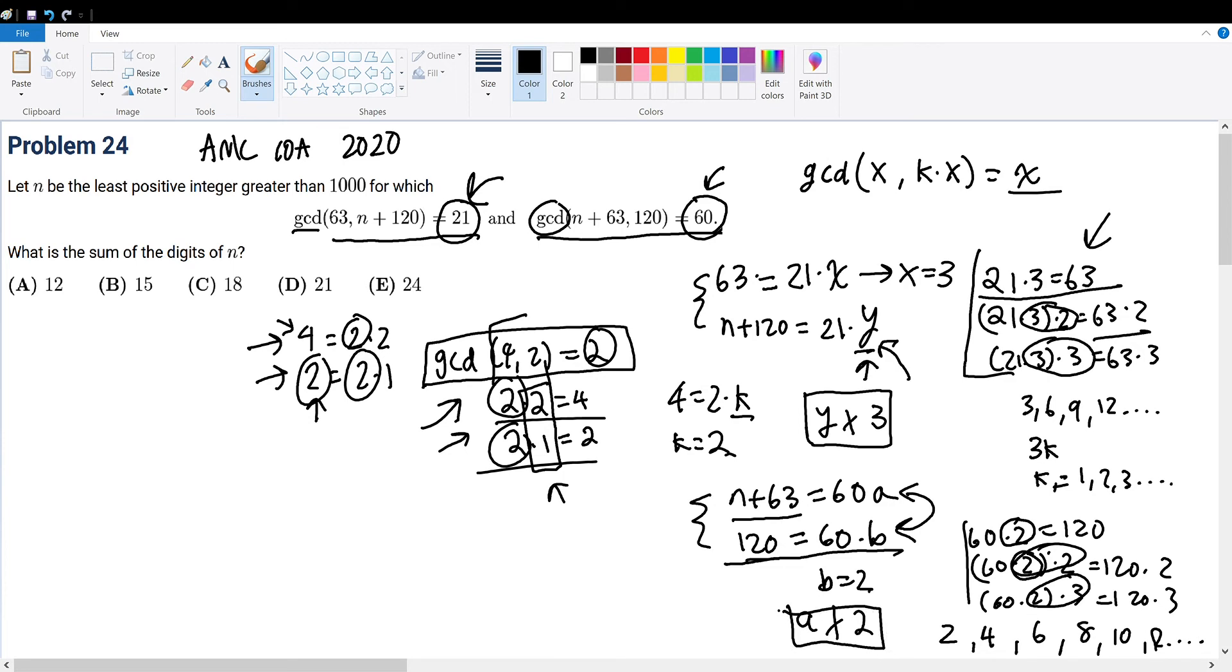Now with the two constraints, we can begin to try to solve for n, which is the main goal of this question. So let's begin. n plus 120 must be equal to 21 times y. And we know that n plus 63 must be 60 times some multiple of a. And we see here that we can, for now, get rid of n. And this will help us solving for y and a be easier. Because if we solve for y or a, y and a determines what n will be, because it determines what the end result of n plus 120 will be. So this will not harm our process of solving our question. So this becomes 57 is equal to 21y minus 60a. We see here that both have a multiple of three within all the factors. So we cancel that out to be 19 is equal to 7y minus 20a.